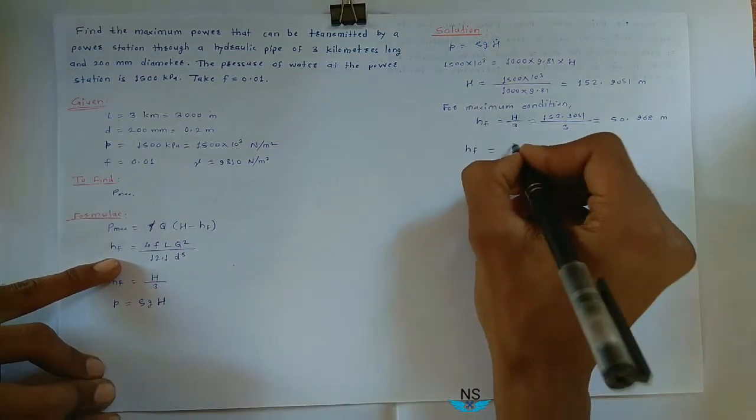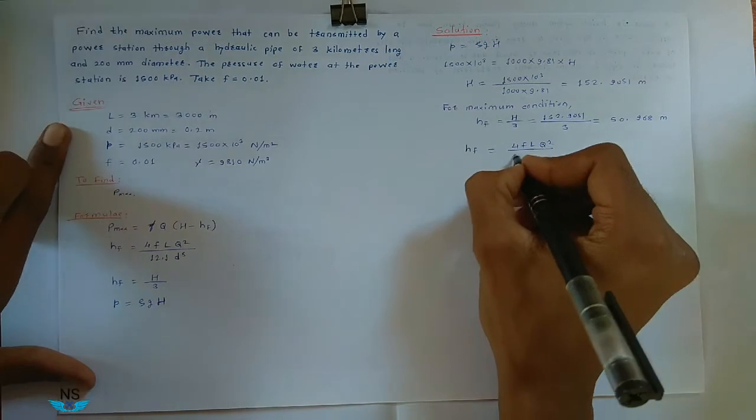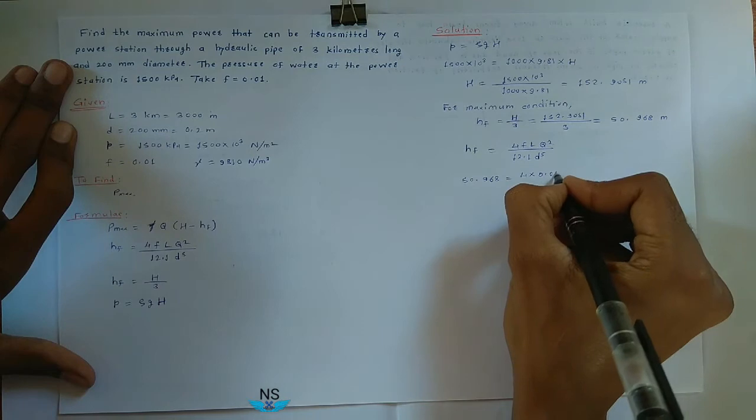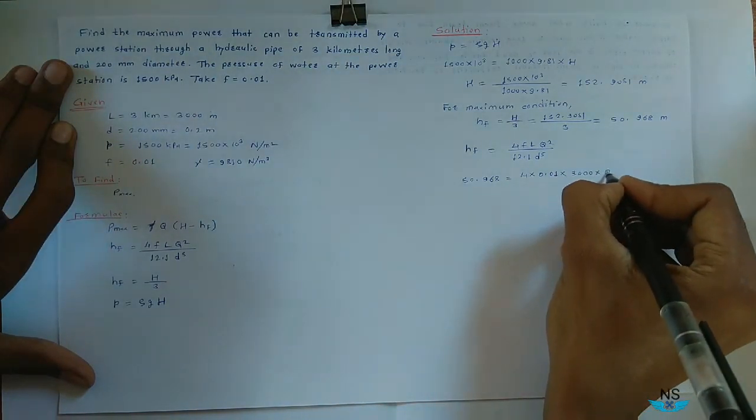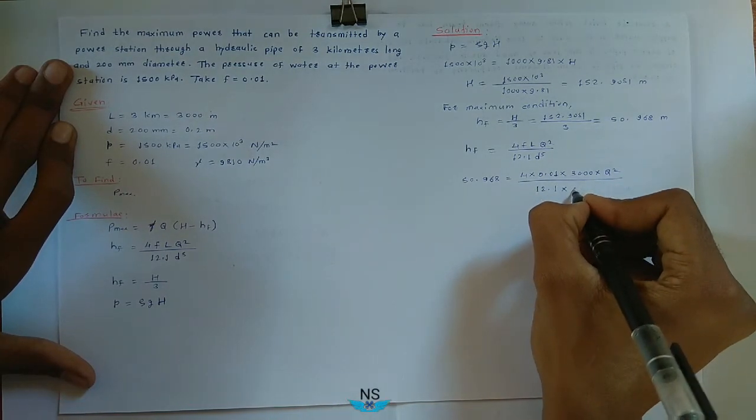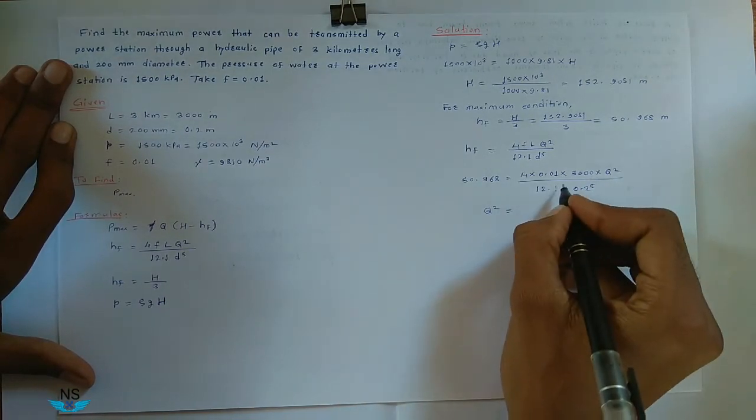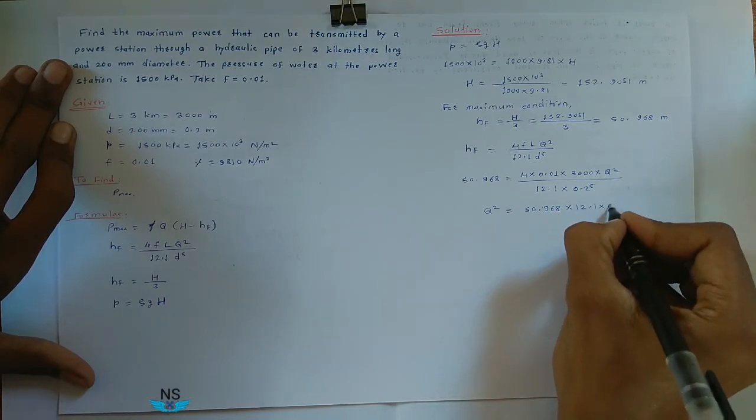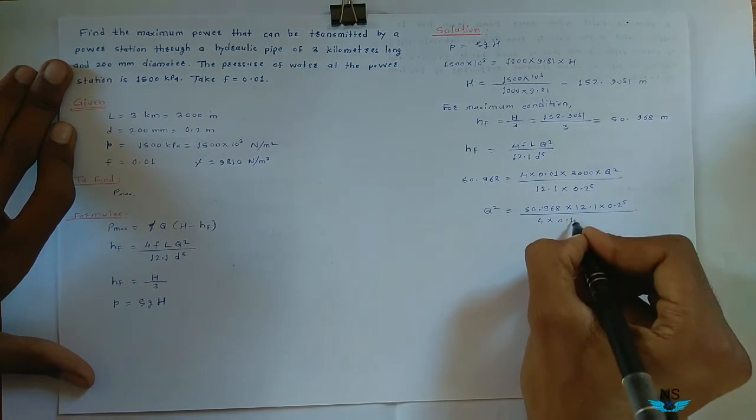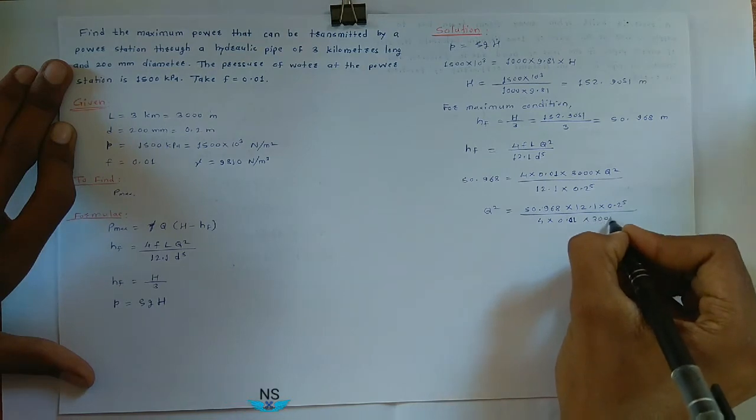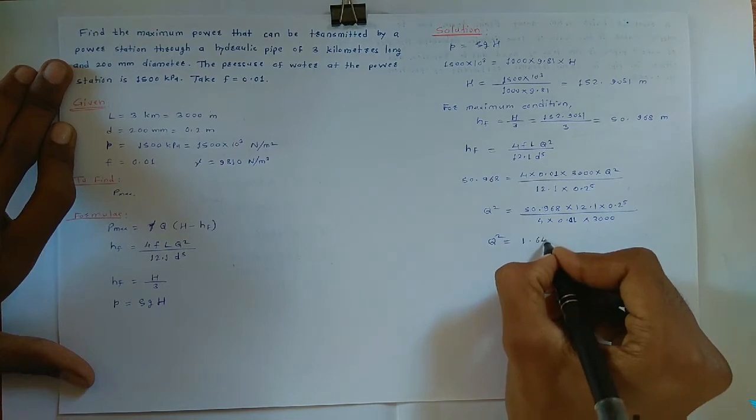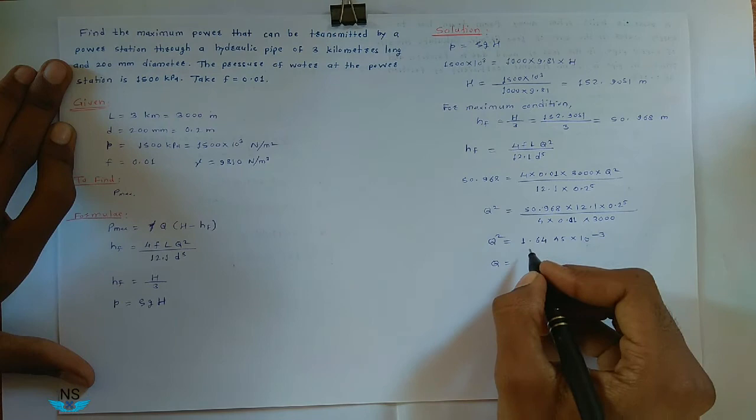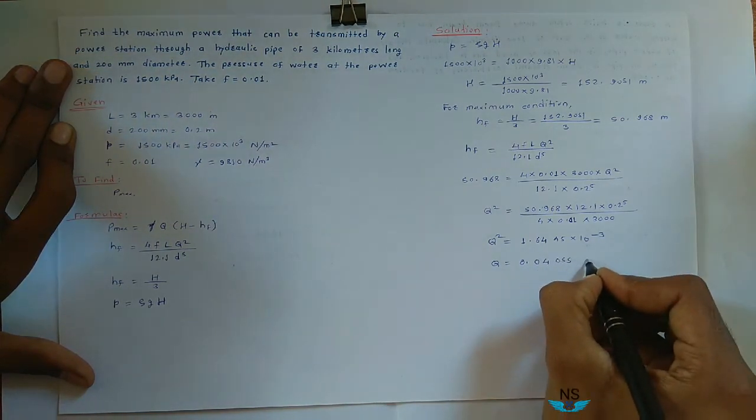After that, you have to find Q. So HF is equal to 4 F L Q square divided by 12.1 into D raised to 5. HF you know, 50.968, is equal to 4 into 0.01 into 3000 into Q square divided by 12.1 into 0.2 raised to 5. So Q square is equal to 50.968 multiplied by 12.1 into 0.2 raised to 5 divided by 4 into 0.01 into 3000. So Q square becomes 1.645 into 10 raised to minus 3. So Q becomes, take root of this answer, so Q becomes 0.04055 meter cube per second.